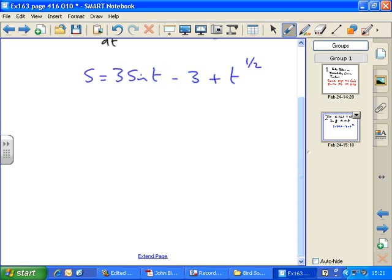Now I can differentiate. ds/dt equals - sine becomes cos, 3 cos t. So there's no number in front of sine, so just sine t becomes cos t.